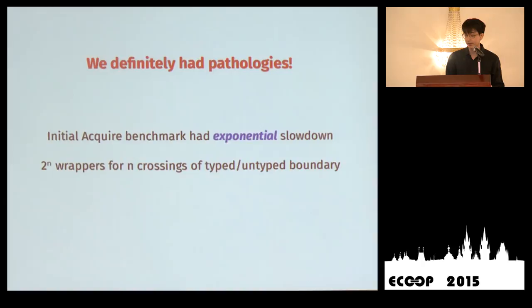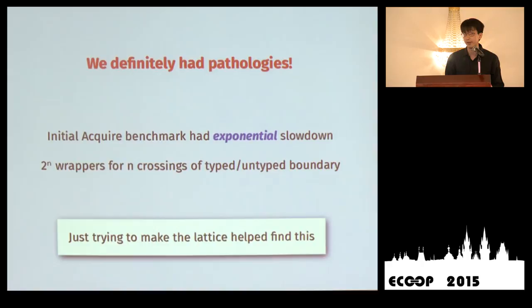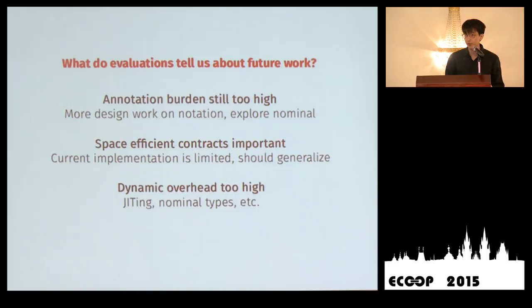We definitely found performance pathology: the initial acquire benchmark had exponential slowdown — accumulating 2-to-the-n contract wrappers for n crossings of the typed-untyped boundary. But building the performance lattice helped find this problem, so the evaluation method proved useful. Future work includes reducing type annotation burden, exploring nominal typing, making contracts space-efficient, and investigating JIT compilation or nominal types to reduce dynamic overhead.